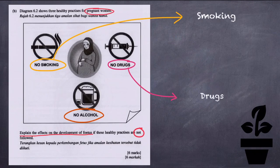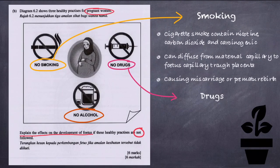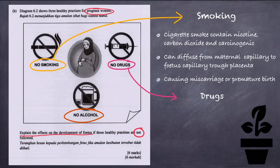Firstly, smoking. Cigarette smoke contains nicotine, carbon dioxide, and carcinogens. These substances can diffuse from the maternal capillary to the fetal capillary through the placenta, causing miscarriage or premature birth.